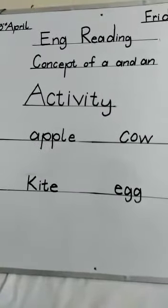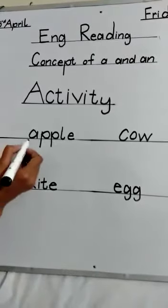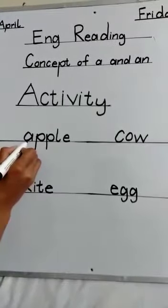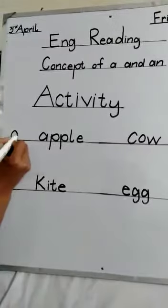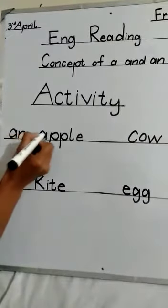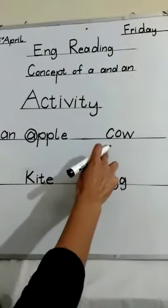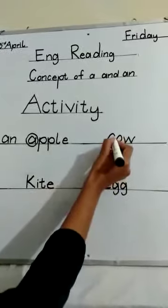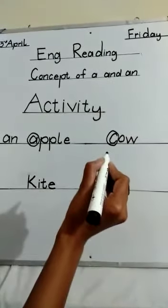Dear student, I, E, A, and N. What is this? A. A is a vowel. What is used with vowels? A, N — N. What is this? C. C is a consonant. What is used with a consonant? A.